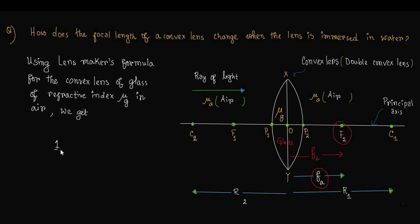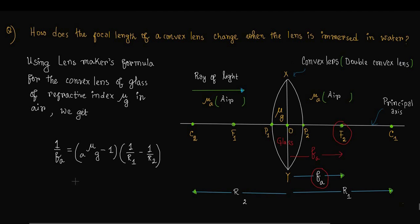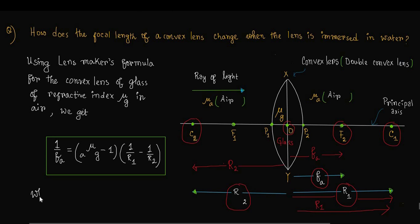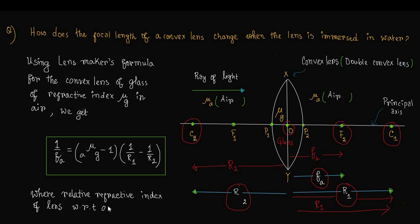We get 1/Fa = (a_mu_g − 1) × (1/R1 − 1/R2), where R1 is the radius of curvature of the first refracting surface and R2 is the radius of curvature of the second refracting surface. Here, a_mu_g is the relative refractive index of the glass lens with respect to air, equal to mu_g divided by mu_a.